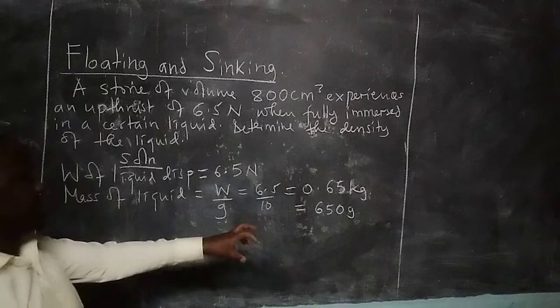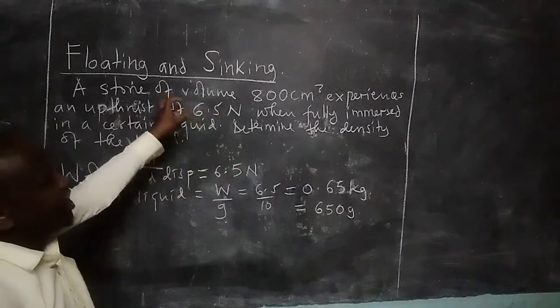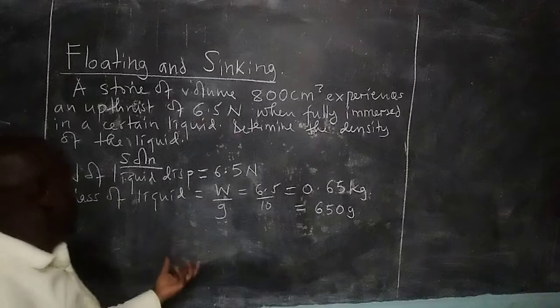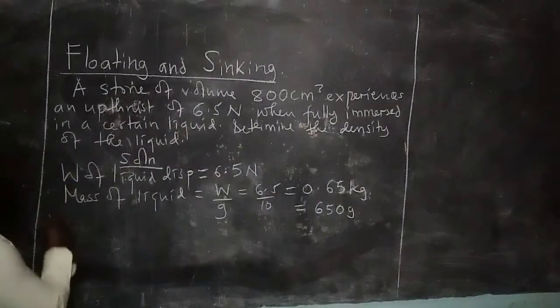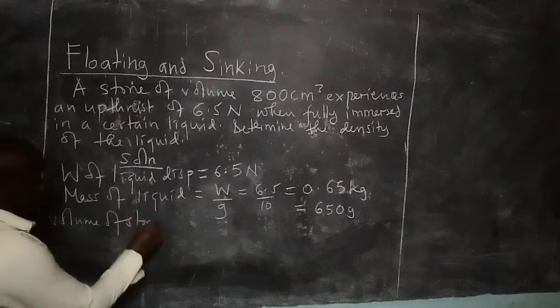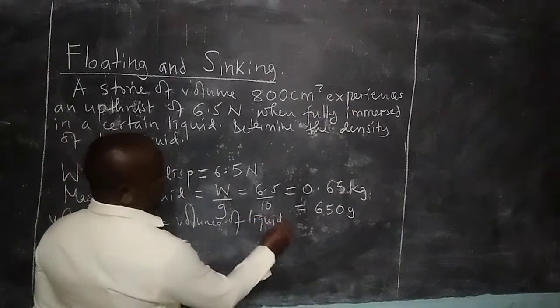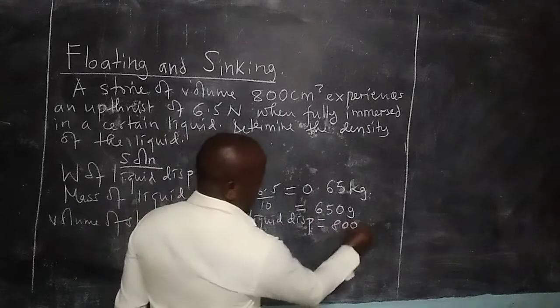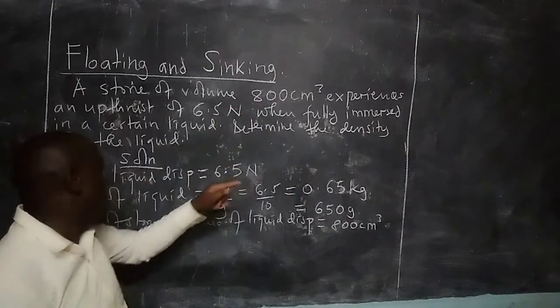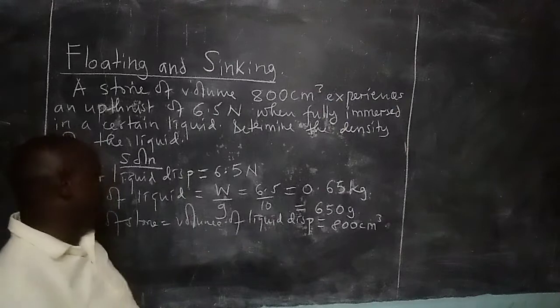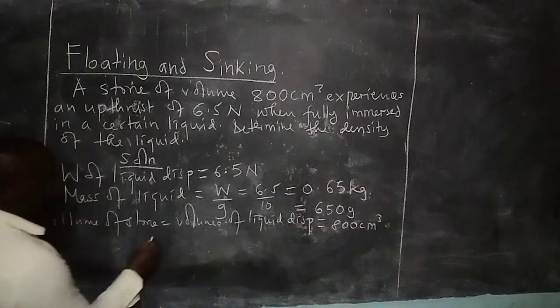Now we got the mass of the liquid. Because the stone has a volume, when the stone is fully immersed, the liquid it is going to displace will equal the stone's volume. So volume of stone equals the volume of liquid displaced, which gives us 800 cubic centimeters. Since the stone is fully immersed, its own volume will be equal to the volume of the liquid that gets displaced. And we know the volume and the mass of the liquid.